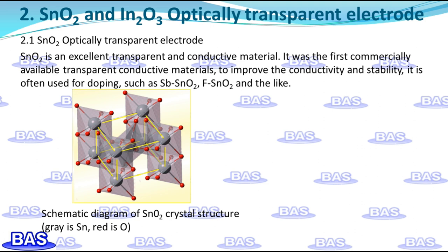First, tin oxide. Tin oxide is an excellent transparent conductive material and the first transparent conductive material put into commercial use. It has a tetragonal rutile structure. To facilitate observation, the structure is marked with a yellow line indicating the square rutile structure part. The structure shows red for oxygen and black for tin. Tin oxide is composed of two tin and four oxygen atoms, with the central tetravalent tin atom surrounded by an octahedron of six oxygen atoms.